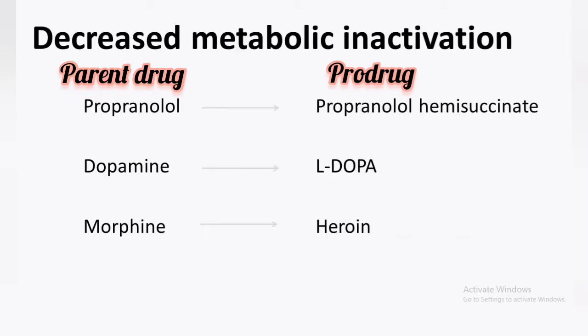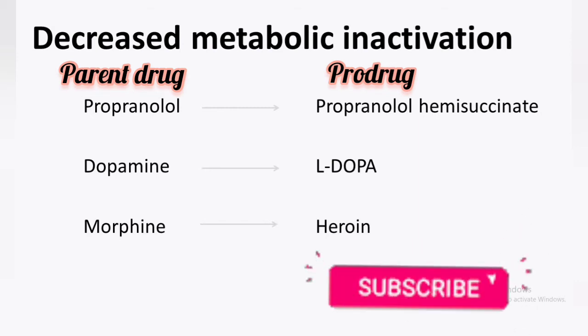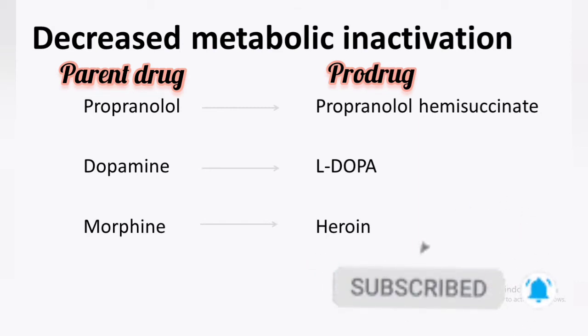In order to decrease metabolic inactivation, Pro-drugs are formed. If a drug does not stay for sufficient time at the site of action, it cannot show its pharmacological effect. So drugs with high first-pass metabolism are converted to their Pro-drug form. For example, Propranolol has a high first-pass metabolism, so it is converted to Propranolol hemisuccinate, which gets activated in the body after metabolism. Dopamine has a short half-life, so it is converted to L-Dopa, and Morphine is converted to Heroin.